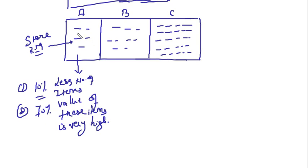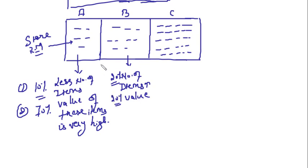Now we have department B. Here the number of items is a little higher — say 20% of the total items — and the value of these items is also approximately 20%. These are not high-value or low-value items; they are average items. There is no hard and fast rule; these are just approximations to understand the concept.